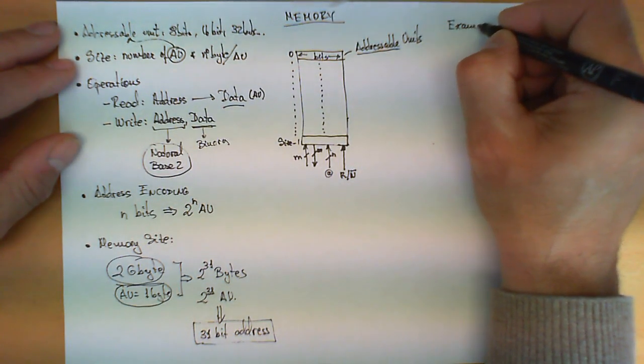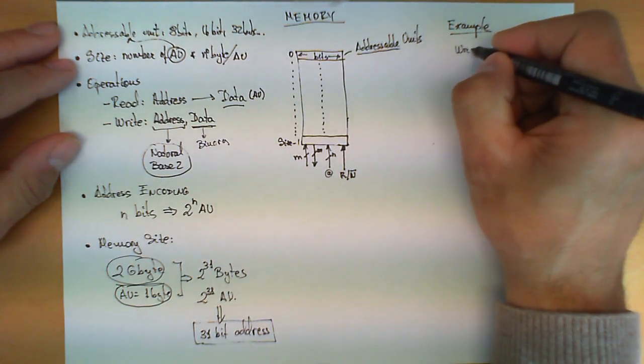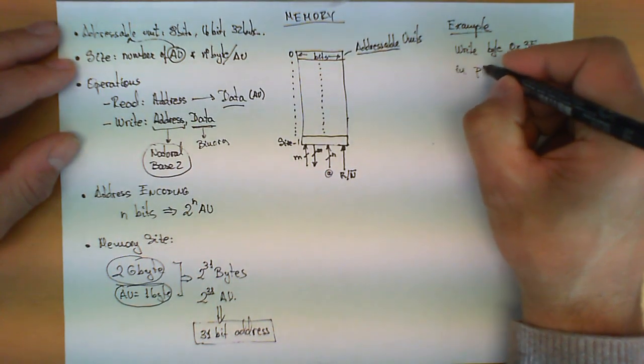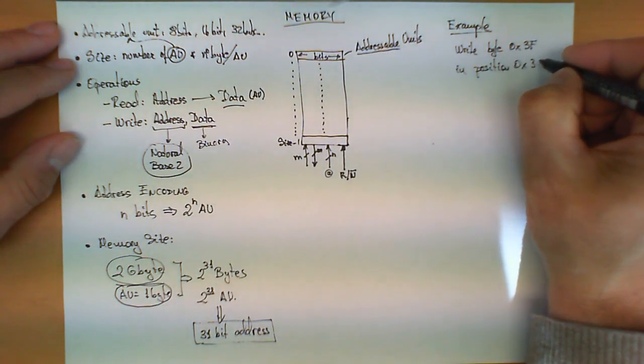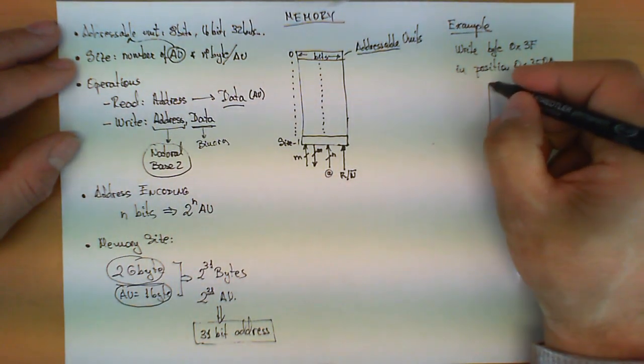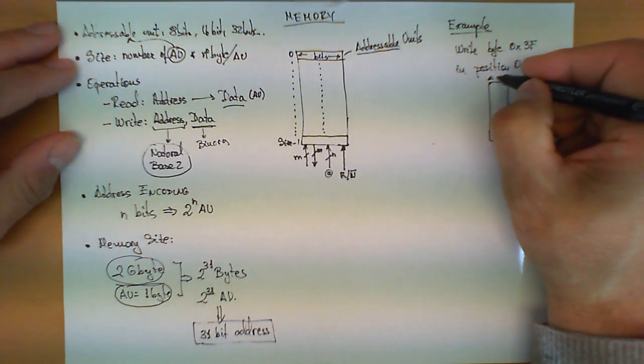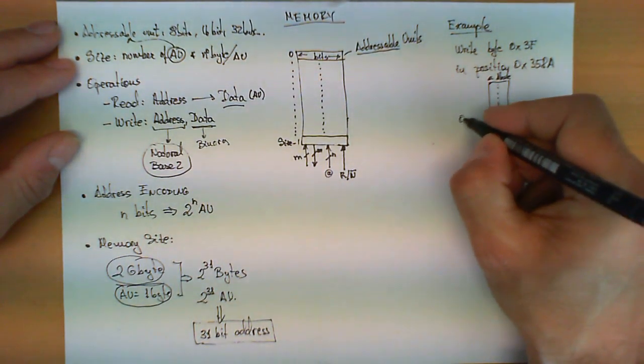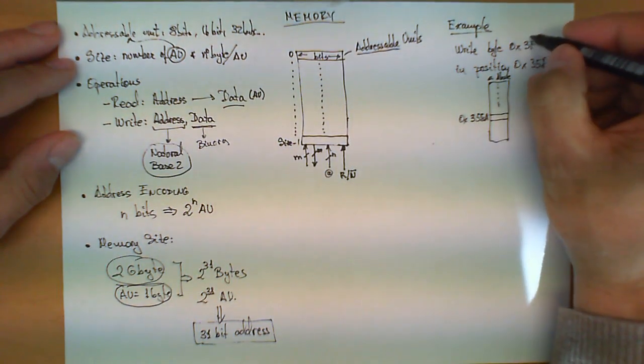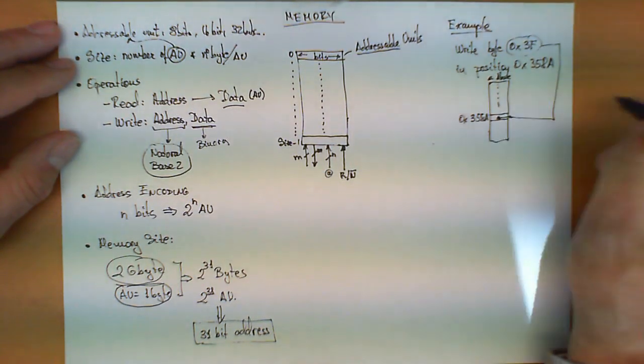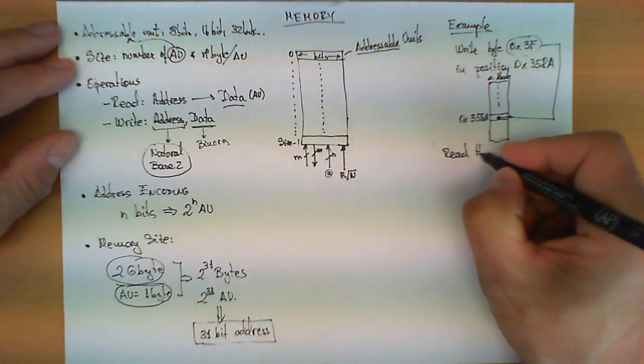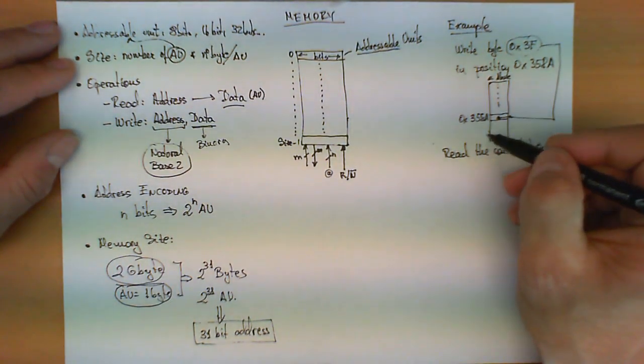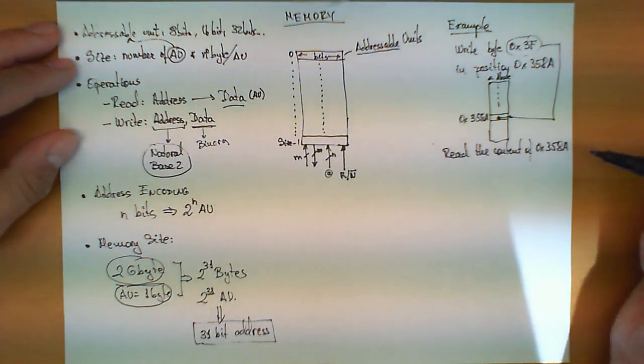So, a very simple example, suppose that we have a chip, and the operation we want to do is to write byte with value, that's represented in hexadecimal for convenience, 3f, in position, or in address, 0x358a. So, what happens here, if I have a memory, let's assume that the addressable unit is one byte, then, at some point, we have this position here, or this addressable unit, which is the one that has the address 358a, and this value over here is then written or stored inside the cell. Analogously, if we perform the read operation, read the content of 0x358a, what this circuit will return is the value 0x3f, the value 3f of this byte, which was previously written.